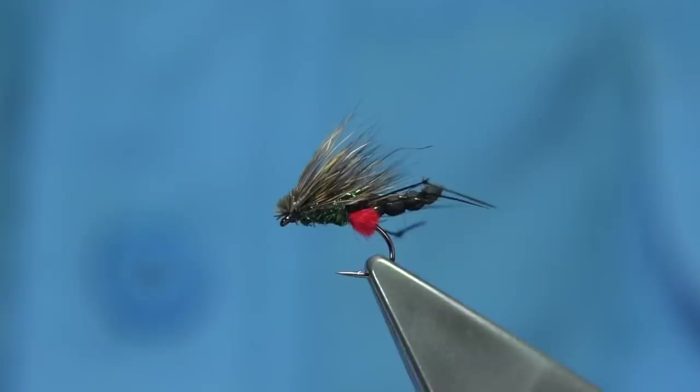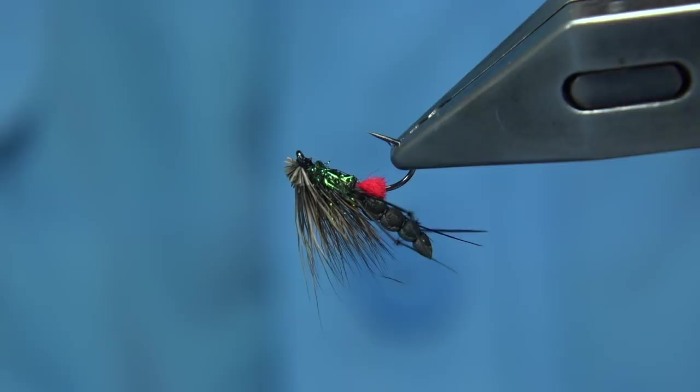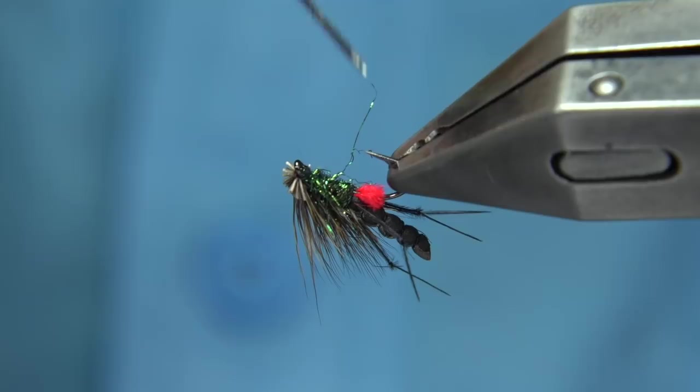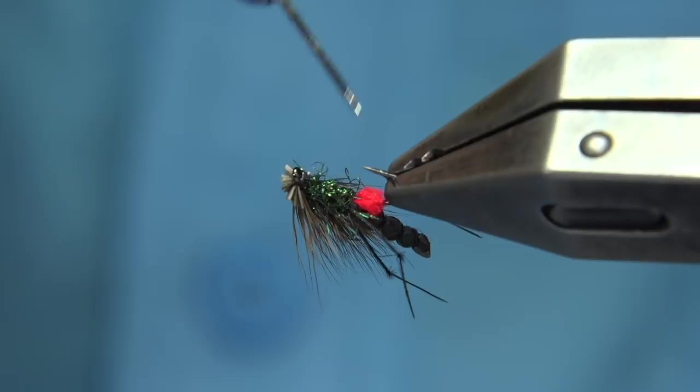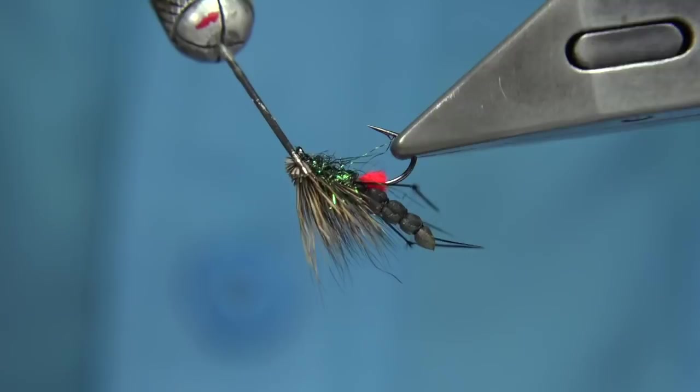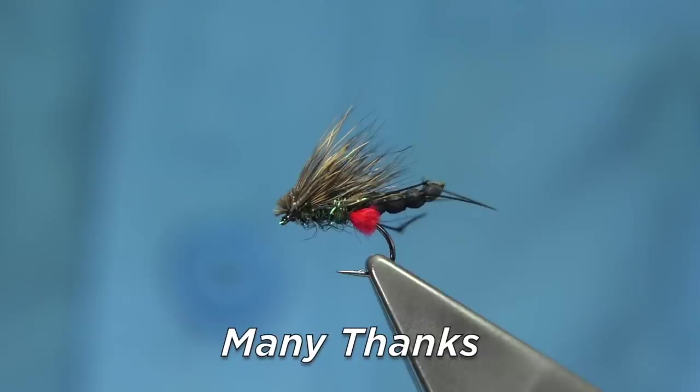You could use a needle and just pick out an odd fiber. There we go, give it a bit more leggy look. Through fishing this, this will start to wear a bit. There we go, and that's your red tag hog hopper. I hope you enjoyed that. Thank you.